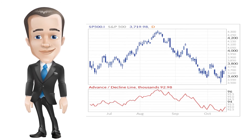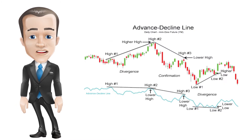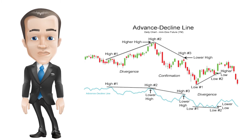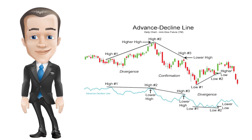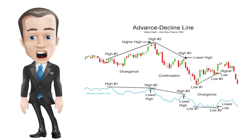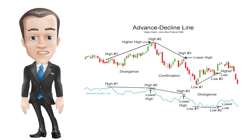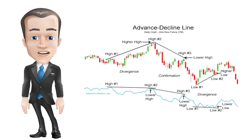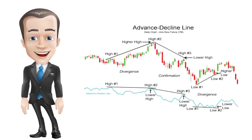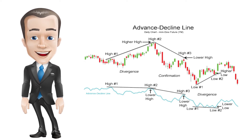An increasing advance-decline line is bullish because more stocks at the New York Stock Exchange are closing the day with gains, whereas a decreasing advance-decline line is bearish because more stocks are closing with losses. The AD line is a powerful confirmation and divergence warning tool. For example, looking at the mini Dow futures contract: from high 1 to high 2, the mini Dow made a higher high, but the advance-decline line failed to make a new high — in fact, it made a lower low. Fewer stocks were participating in the rally, signaling strong bearish divergence.